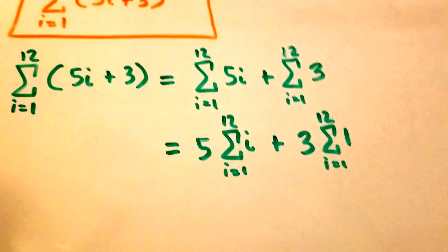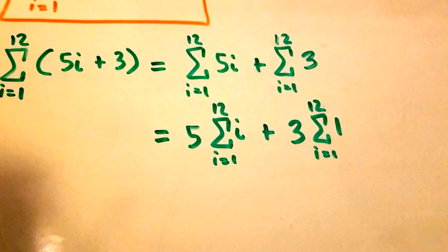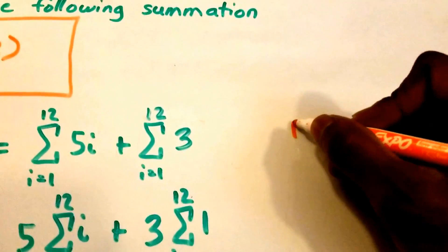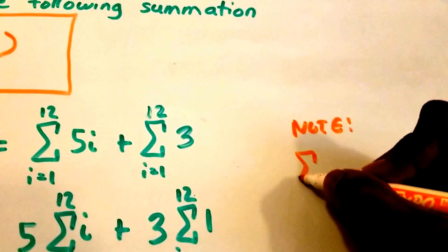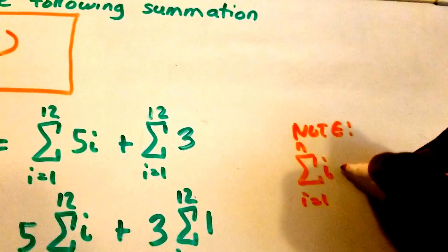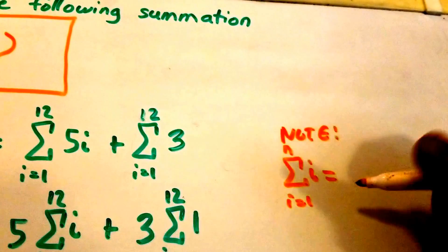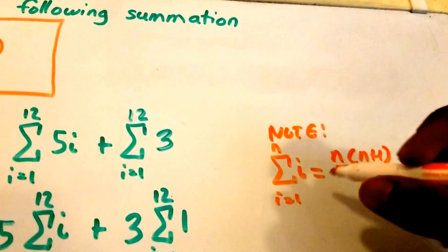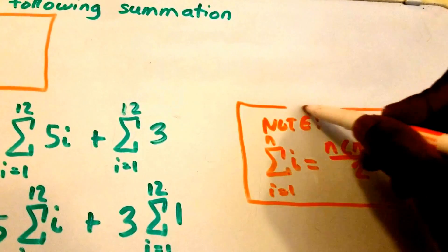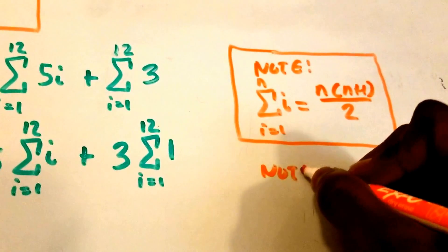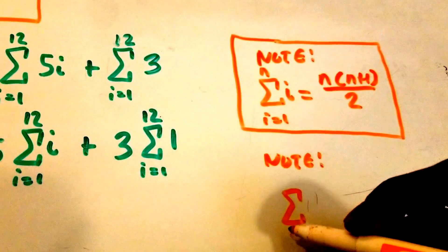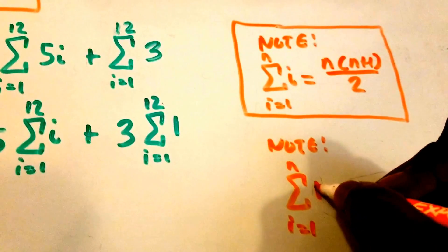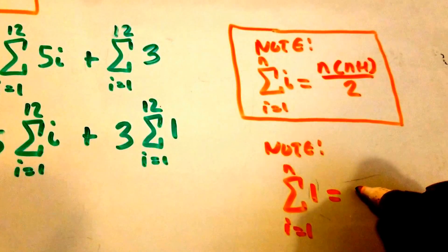Now we want to use summation formulas. The first formula states that the summation from i equals 1 to n of i equals n times (n plus 1) divided by 2. The second formula states that the summation from i equals 1 to n of 1 is equal to n.